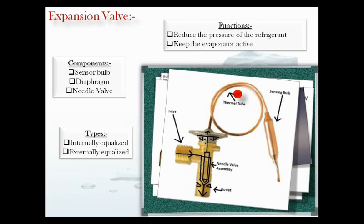An externally equalized thermostatic expansion valve compensates for any pressure drop through the evaporator. The high pressure liquid refrigerant entering the expansion valve is quite warm, which may be verified by feeling the liquid line at its connection to the expansion valve. The liquid refrigerant leaving the expansion valve is quite cold. The orifice within the valve does not remove heat, but only reduces the pressure. Heat molecules contained in the liquid refrigerant are allowed to spread as the refrigerant moves out of the orifice, so the liquid refrigerant is at its coldest as it leaves the expansion valve and enters the evaporator.